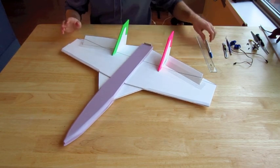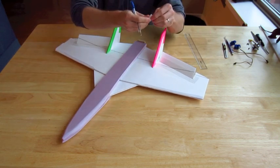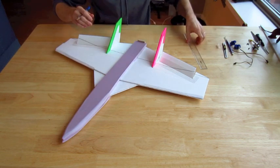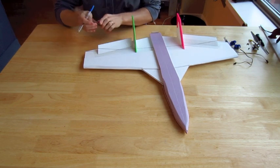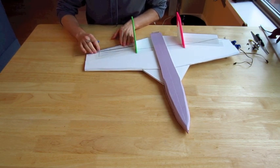All right. So this build is almost done. The next thing we need to do is put on the control horns. I'm just using these from Dubrow. They make these little plastic ones that are really nice. So I'm going to mark on the Elevon. So this is seven inches wide here.